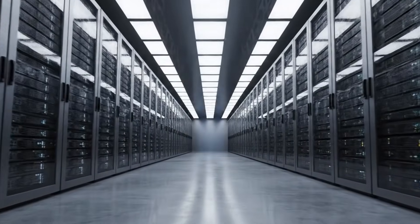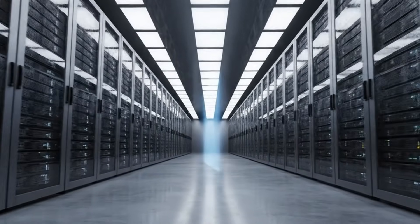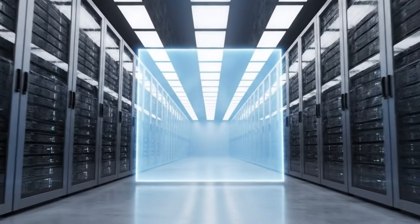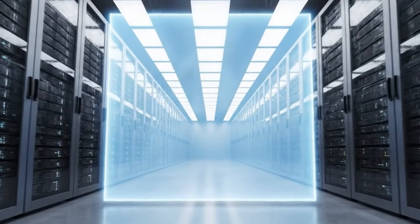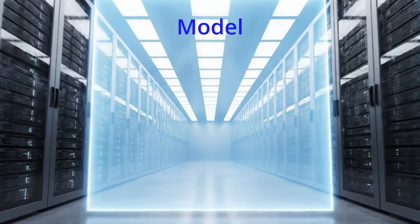Before we delve into the topic, let's define a few terms you'll come across in AI. Model: this is the brain of an AI that makes predictions. Training: this is a process where the model looks at data and learns patterns.